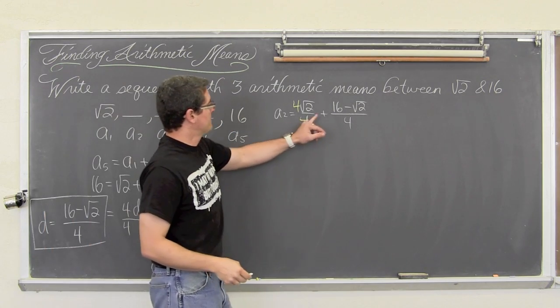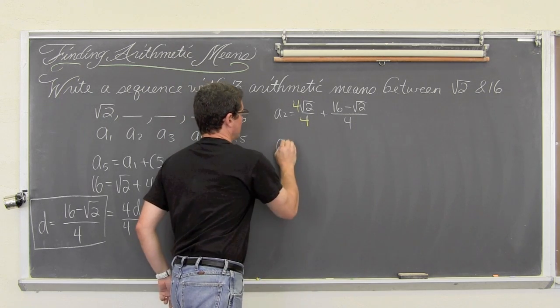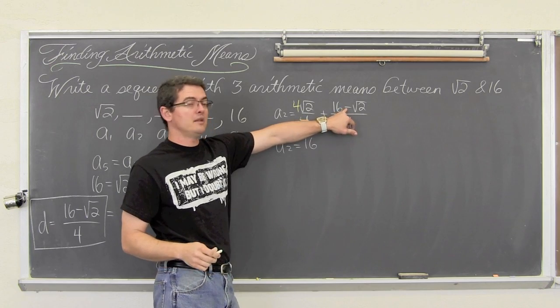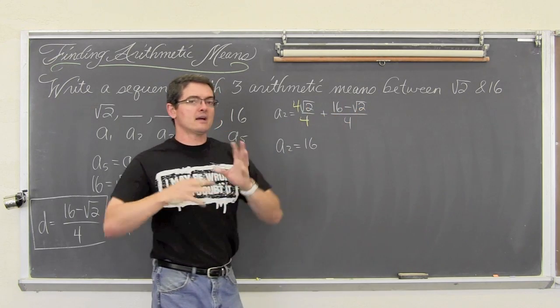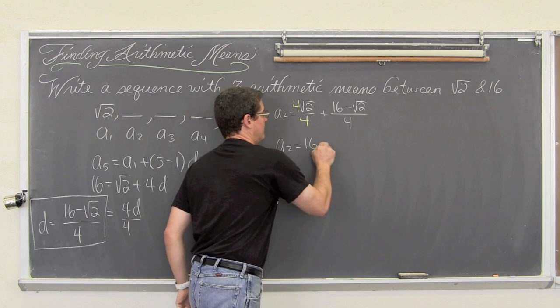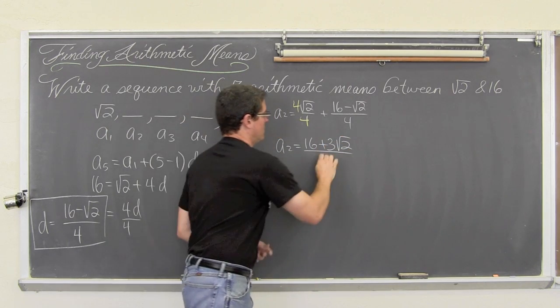And now we have common denominators. So we have a sub 2 is equal to 16 plus 4 square root of 2 over 4. 4 minus 1 - these square root of 2's are going to act like adding like terms. So 4 minus 1 is equal to 3, giving us 16 plus 3 square root of 2 over 4.